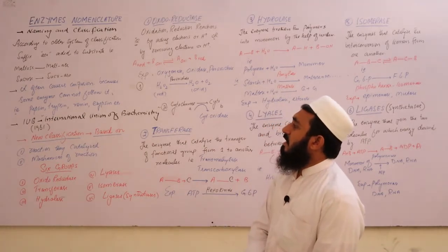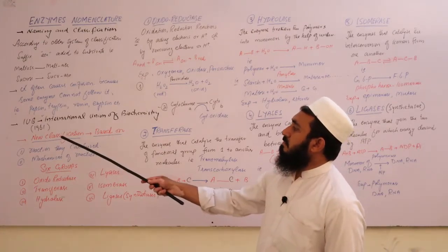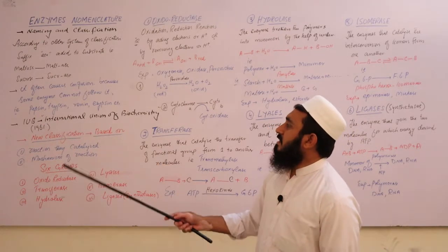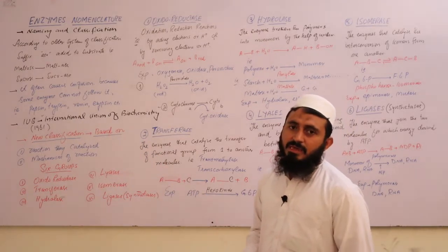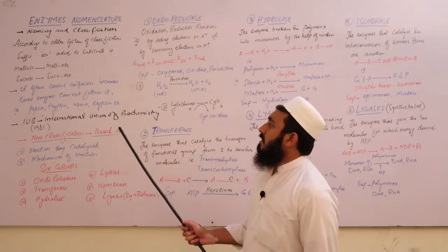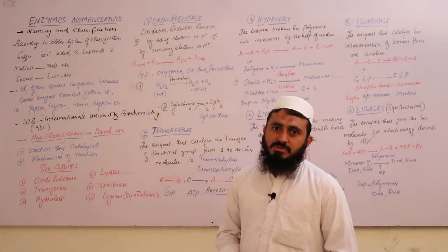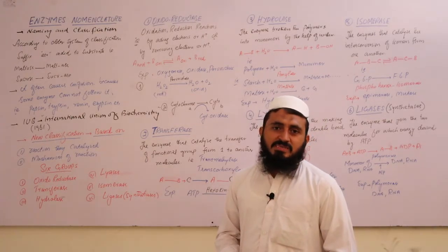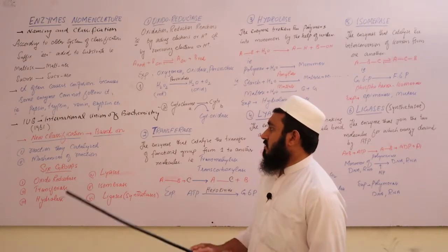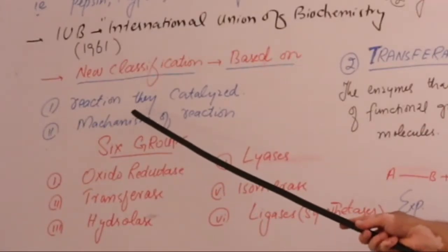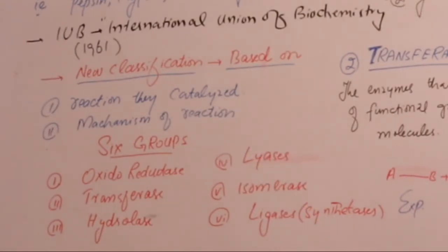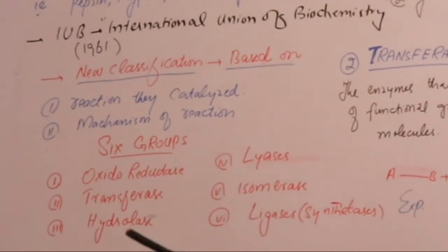This became a significant problem. In 1961, the IUB — International Union of Biochemistry — formed a panel that classified enzymes in a new way. The basis was: what kind of reaction the enzyme catalyzes, and what the mechanism of that reaction is.